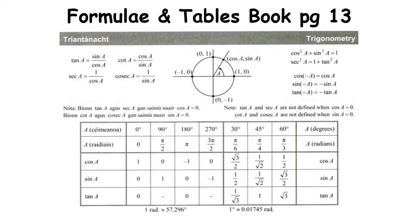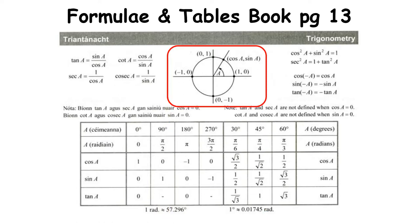Bringing it back to your formula and tables book on page 13, there is a diagram of the unit circle with angle A, giving the point (cos A, sin A) on the circle, along with the four key points (1,0), (0,1), (-1,0), and (0,-1). Essentially, the x-axis is the cos axis and the y-axis is the sin axis.